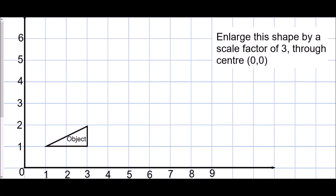We've been asked to enlarge the shape by a scale factor of three through center zero zero. Before we get on to the enlargement, I want to look at this description because it's very important. We've been given three important parts: first, we need to enlarge — that means generally to make bigger. We're going to make the shape bigger by a scale factor of three, which means the shape is going to get three times bigger than it originally is. And we are given a center of zero zero — that is the point where the enlargement begins. The scale factor also means that from this center we will get three times further away.